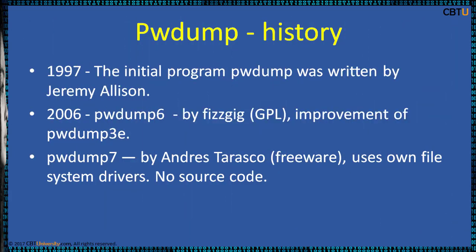Regarding Password Dump history: the initial program called Password Dump was written by Jeremy Allison, who published the source code in 1997. Since then there have been further developments by other programmers. In 2006, Password Dump 6 by Fijgig was released under GPL license as an improvement of Password Dump 3e. Password Dump 7 is by Andris Tarasco — it is freeware using all file system drivers, but no source code is available.